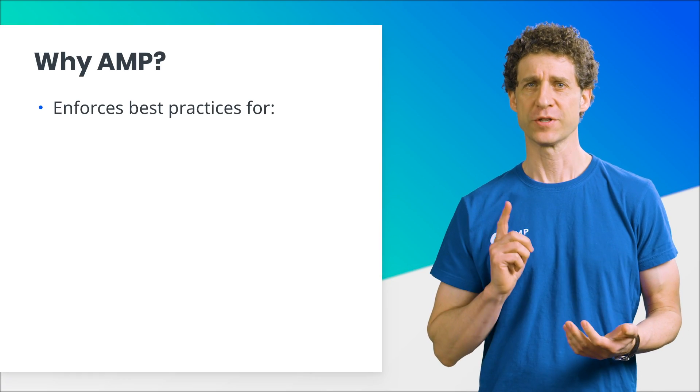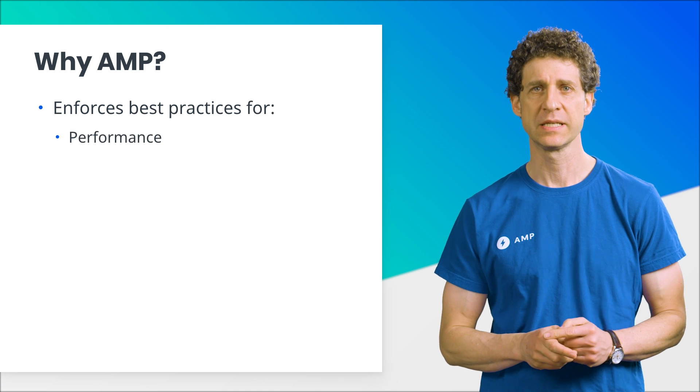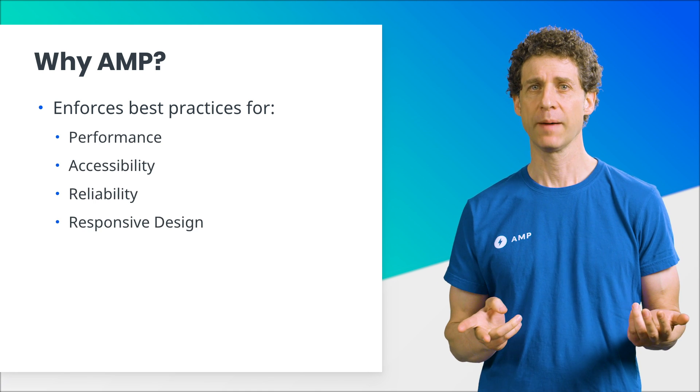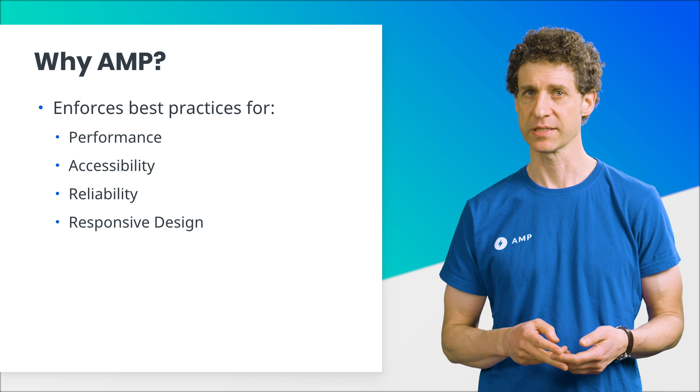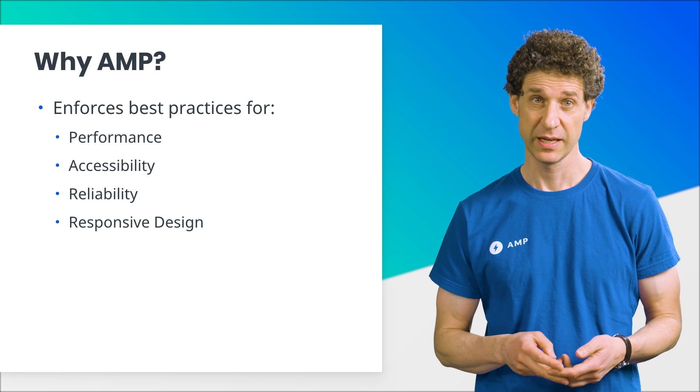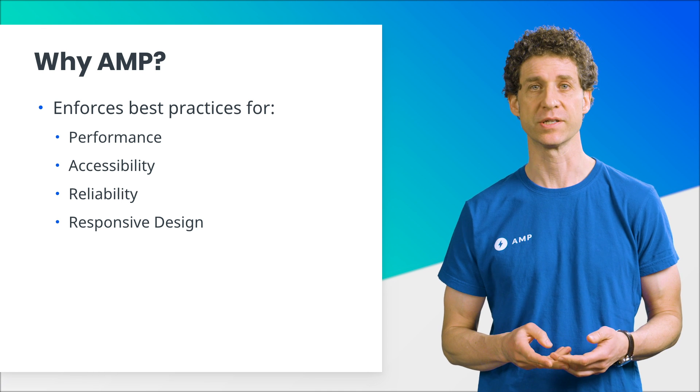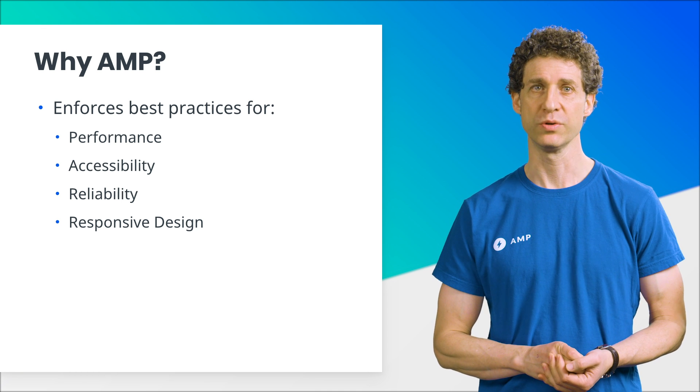The development community has found ways to improve website performance, but it's a lot to learn and a lot to keep track of. Developers want to make fast sites, but it's easy to make mistakes along the way. So AMP enforces best practices for performance, accessibility, reliability, and responsiveness. It helps you create fast web experiences that are easy to maintain. It was created to make it easy for developers to focus on building better features without compromising on user experience.